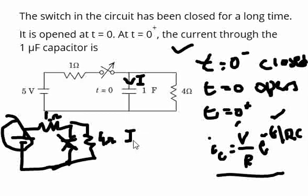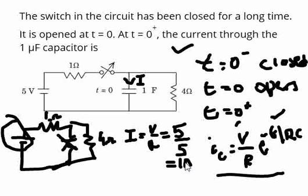The current is I equals V by R, V is nothing but 5 volts, R is nothing but 5 ohms, which is equal to 1 amp, so that means the current through this is 1 amp.